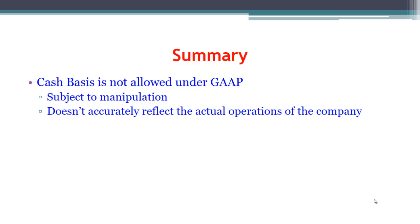The cash basis seems easy, and it is — but it's not allowed by GAAP, generally accepted accounting principles. Any company required to follow GAAP, such as a publicly traded company, cannot use the cash basis. The reason is that the cash basis is subject to manipulation: you can defer cash receipts or expenditures, and it doesn't reflect the actual underlying operations of the company. We really want to know when revenue was earned and when a benefit was used up. This leads us into our next section on adjusting entries under the accrual basis.